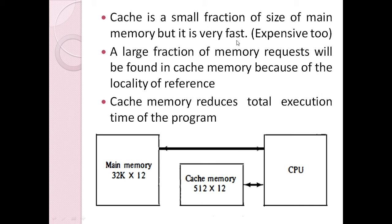Cache is a small fraction of main memory but it is very fast, and therefore it is expensive. Because it is expensive, we keep it smaller. A large fraction of memory requests will be found in cache memory because of the locality of reference — whenever the CPU requires something, most of the time it will be there in cache. This happens due to a special property of computer programs called locality of reference.